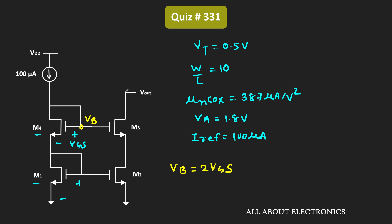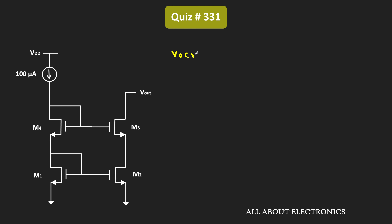This terminal is the drain terminal of M3. For the proper operation of this cascode current mirror, M3 should operate in saturation. That means Vd3 should be greater than or equal to Vg3 minus Vt. In other words, the output voltage should be greater than or equal to Vb minus Vt. Therefore, the minimum required output voltage is equal to Vb minus Vt, which equals 2Vgs minus Vt.